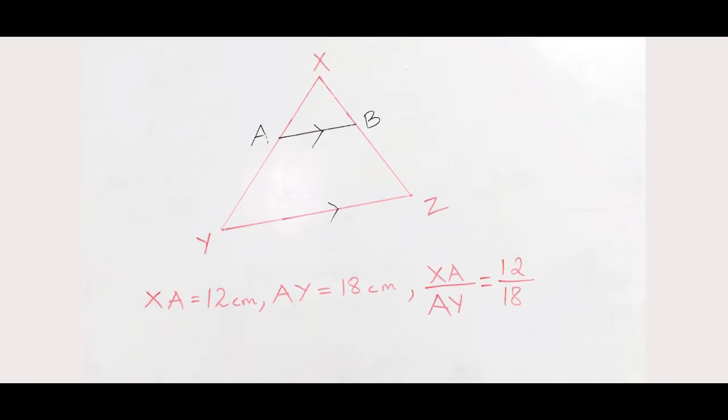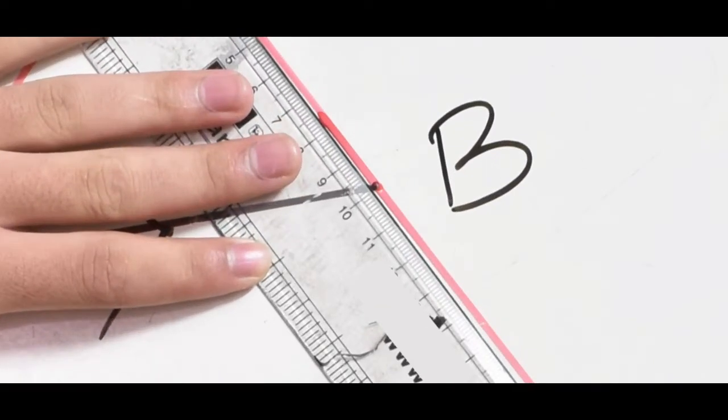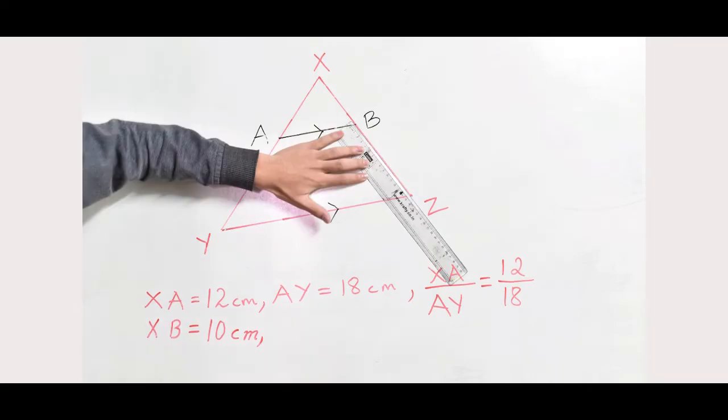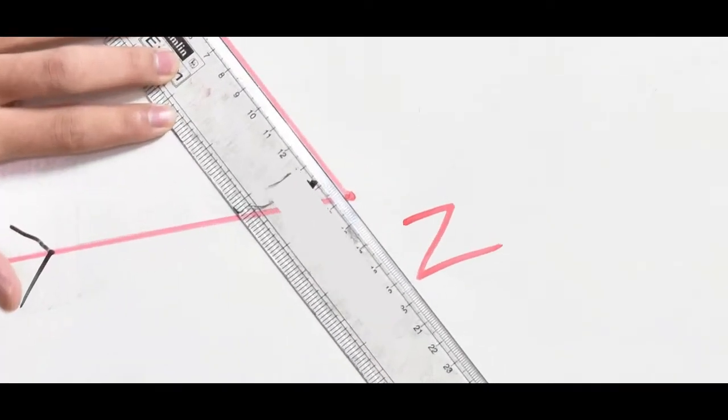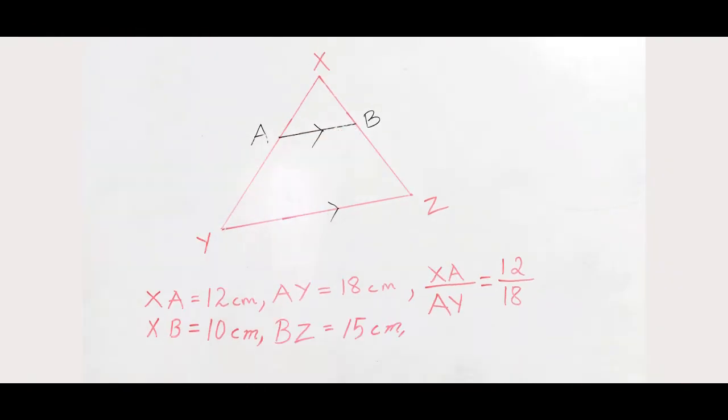So let us measure XB. So XB is how much? XB is 10 cm, so we will write XB equal to 10 cm, and BZ is how much? BZ is 15 cm, so we will write BZ equal to 15 cm, and the ratio XB by BZ is equal to 10 by 15.